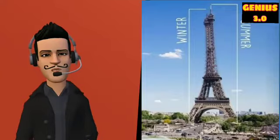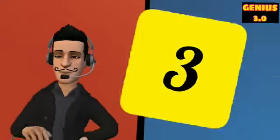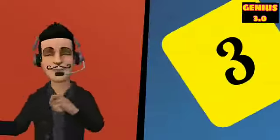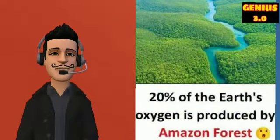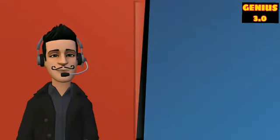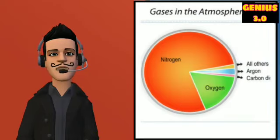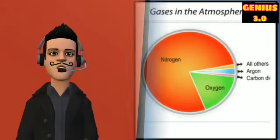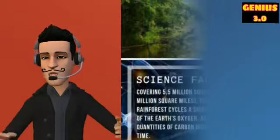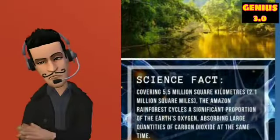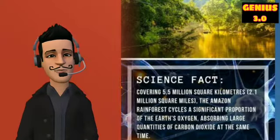The third amazing fact is 20% of Earth's oxygen is produced by the Amazon rainforest. Our atmosphere is made up of roughly 78% nitrogen and 21% oxygen, with various other gases present in small amounts. The Amazon rainforest cycles a significant proportion of the Earth's oxygen, absorbing large quantities of carbon dioxide at the same time.